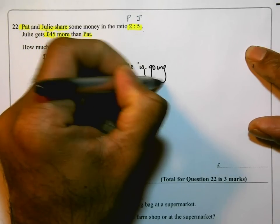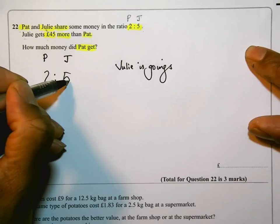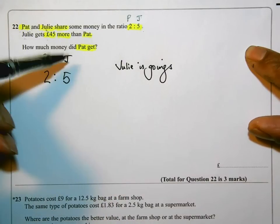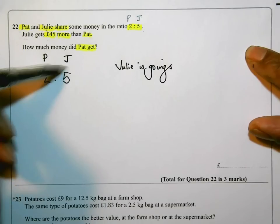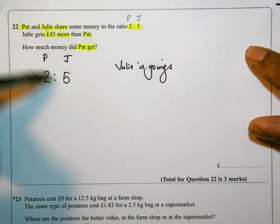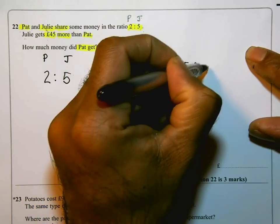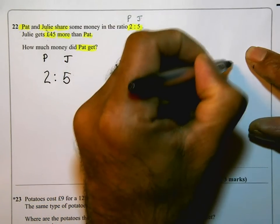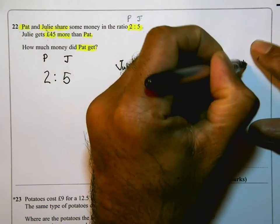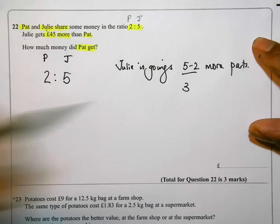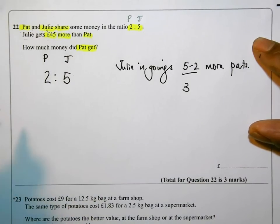If she gets 5 parts and Pat is going to get 2 parts of whatever is shared, Julie is going to get 5 take away 2 more parts. So she's going to get 3 more parts than Pat.